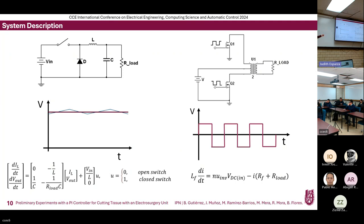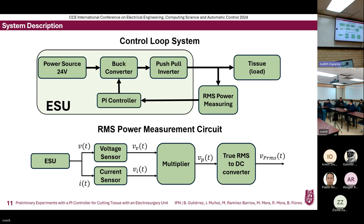Our control loop system consists of our ESU — a 24-volt power source, the buck converter, push-pull inverter, and the tissue as the load — along with a proposed RMS power measurement circuit, which provides the signal to the PI controller to regulate the RMS output power applied to the tissue. The RMS power measurement circuit consists of two sensors: a voltage sensor and a current sensor. These signals are multiplied to obtain a voltage proportional to instantaneous power, and then a true RMS-to-DC converter is used to obtain a voltage proportional to the RMS power.